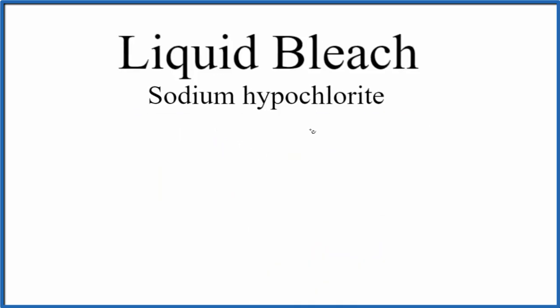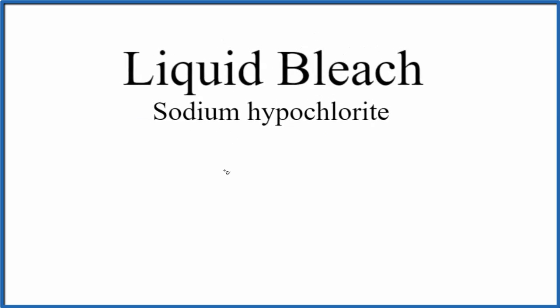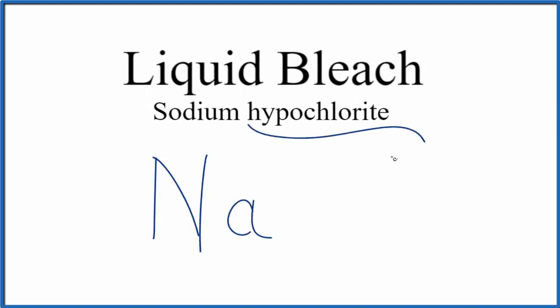First we'll write the element symbol for sodium — that's just Na. Then we get to hypochlorite. You're not going to find that on the periodic table; when you see 'hypo' or 'ite,' it's not going to be on the periodic table.